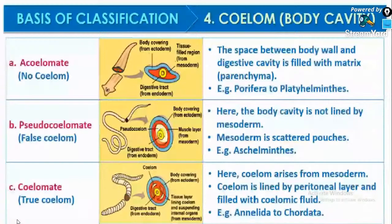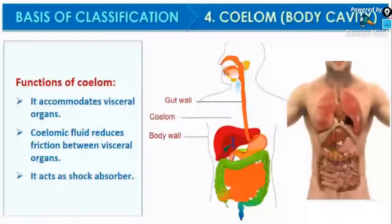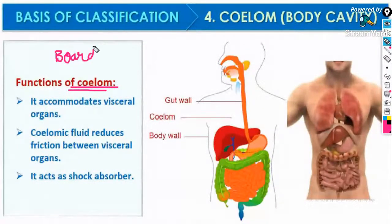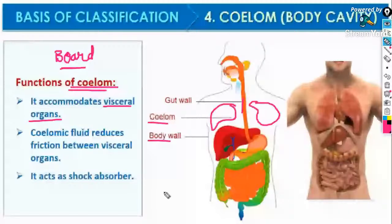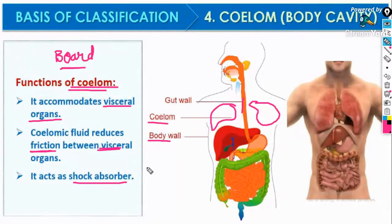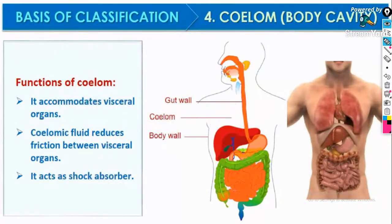Functions of coelom: it accommodates the visceral organs. Coelomic fluid reduces friction between the visceral organs. It acts as a shock absorber — protecting each organ. The coelomic fluid behaves as a protective medium for the visceral organs, reducing pressure and friction between them.